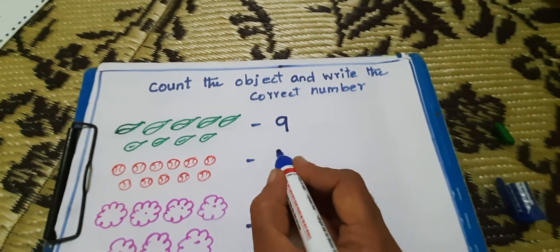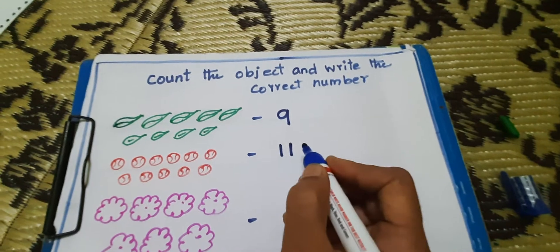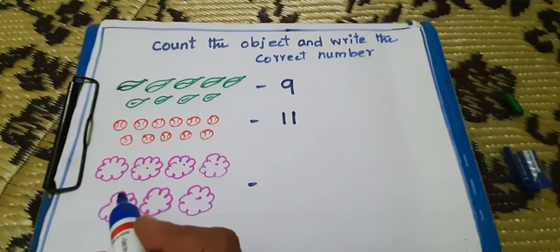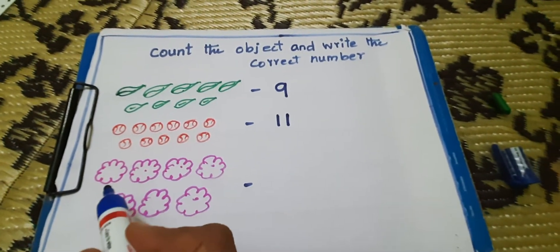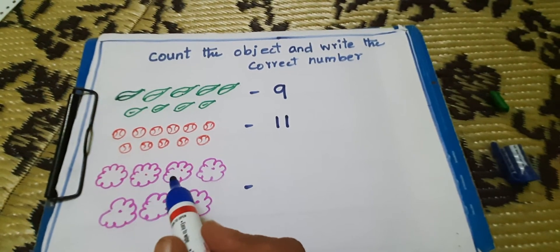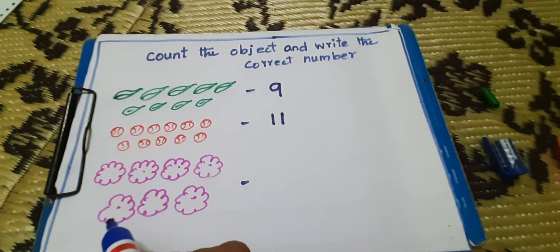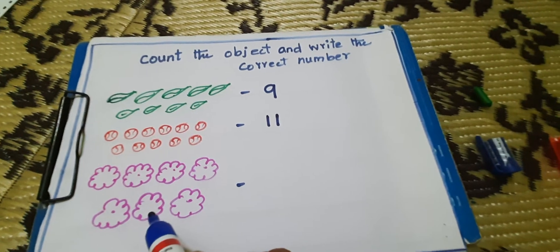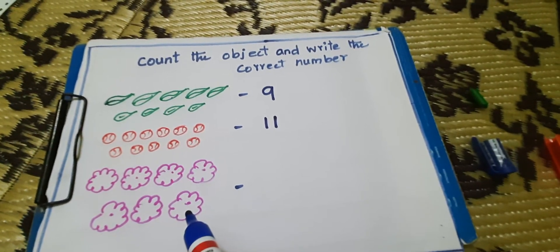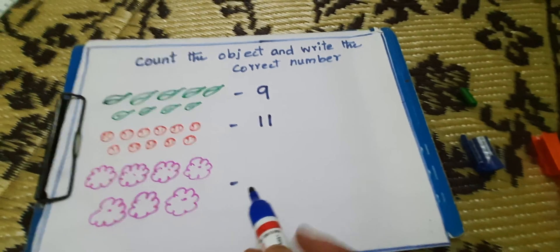11. How many flowers are there counted? 1, 2, 3, 4, 5, 6, 7. How many flowers are there? 7.